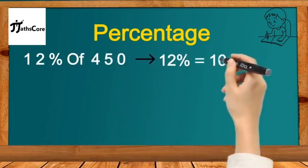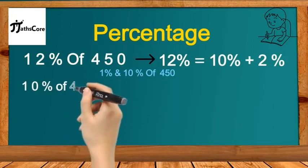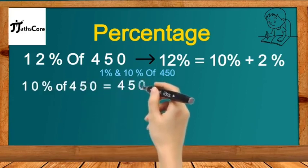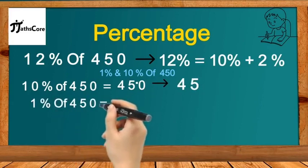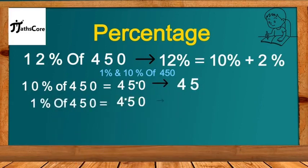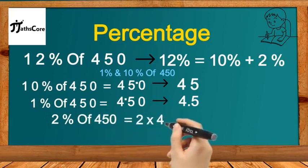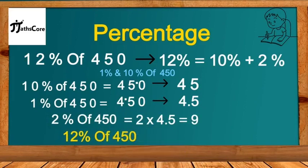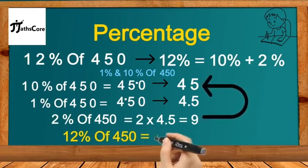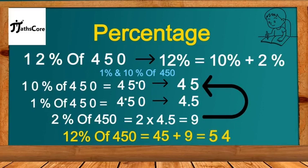Now let us find 12% of 450. 12% is nothing but 10% plus 2%. First, find 1% and 10% of 450: 10% of 450 is 45, and 1% of 450 is 4.5. To find 2%, multiply 2 by 1% of 450: 2 × 4.5 = 9. Then, 12% = 10% + 2% = 45 + 9 = 54. So 12% of 450 is 54.